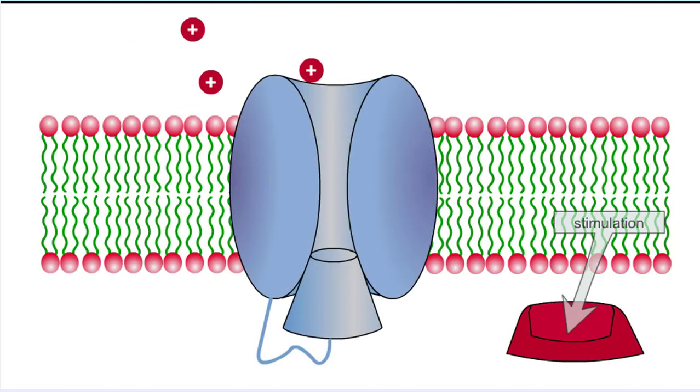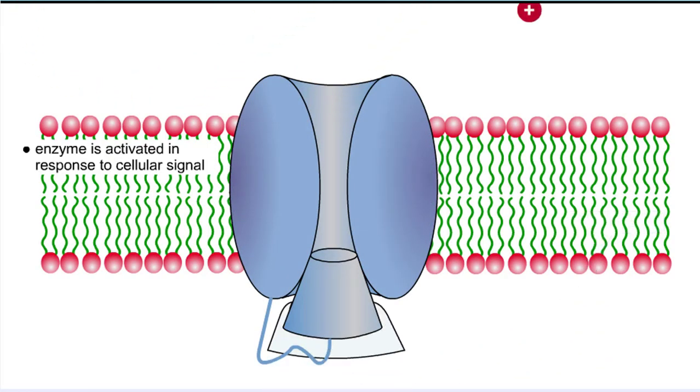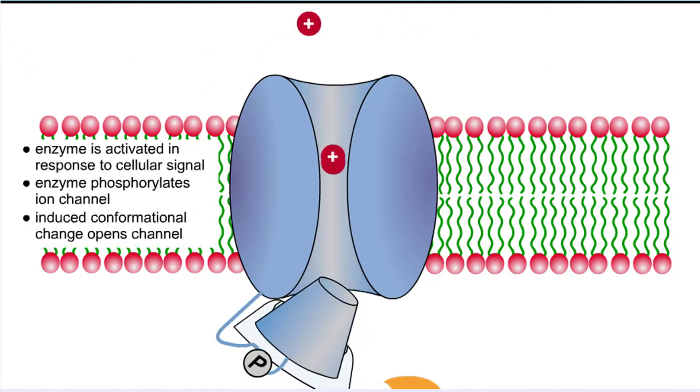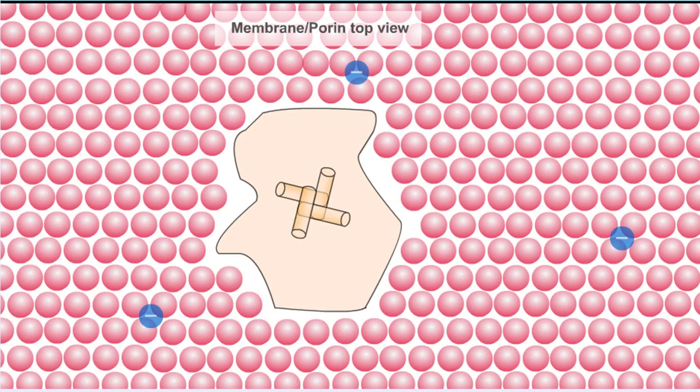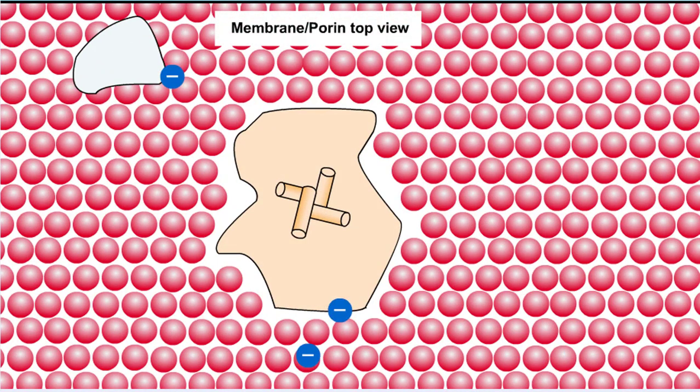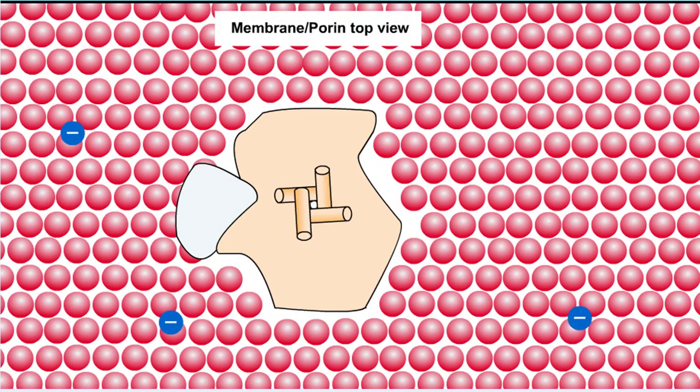After stimulation, the blocked gate then opens by structural changes that move a polypeptide segment out of the channel, or by a concerted conformational rotation of helices that open the pore like the iris of a camera.